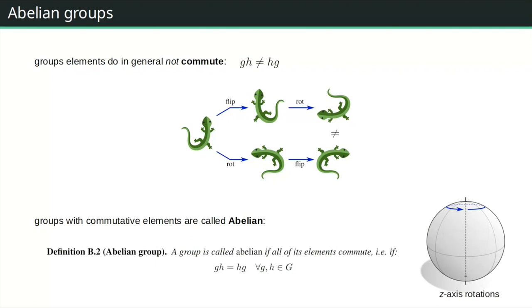A group is called abelian if gh = hg for any pair of group elements. For example, 3D rotations do not commute — rotating a bottle around the axis toward you and then around the z-axis gives a different result than the reverse order. However, the subgroup of rotations around the z-axis only does commute. So SO(3) is not abelian, but SO(2) is.